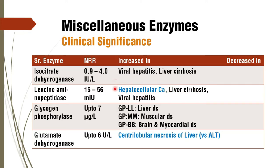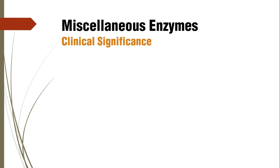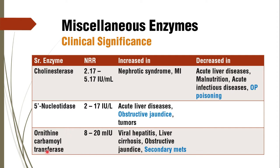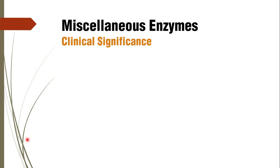Leucine aminopeptidase gives a more specific picture in case of hepatocellular cancer. In hepatocellular cancer, you will find all liver enzymes increased — AST, ALT, alkaline phosphatase, gamma GGT, 5' nucleotidase, etc. But the rise of leucine aminopeptidase is definitive of hepatocellular carcinoma, a primary liver cancer. So if it is a primary liver cancer, it is leucine aminopeptidase; and if it is secondary metastasis, it is ornithine carbamoyltransferase. This particular distinction gives you many MCQs and viva questions.